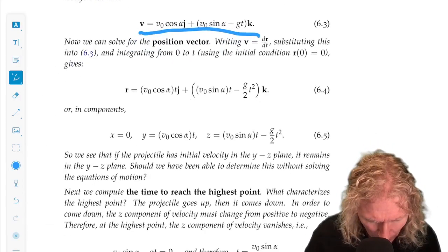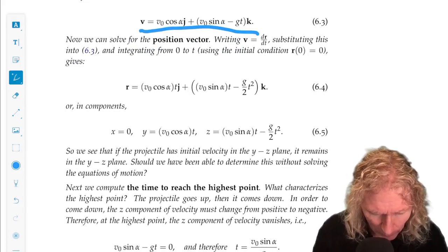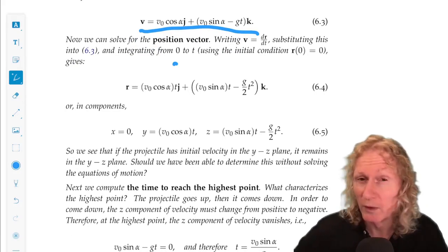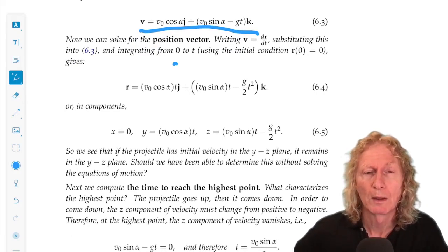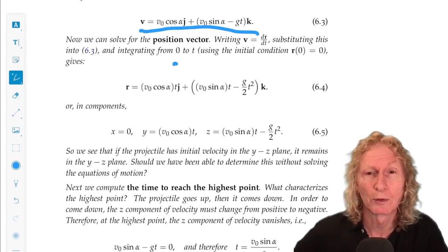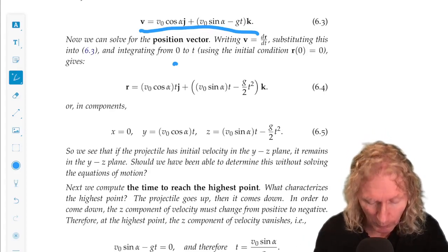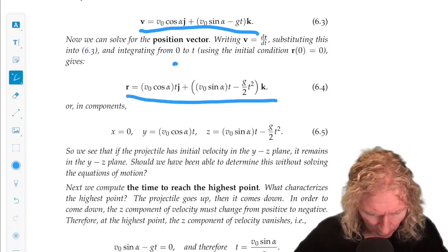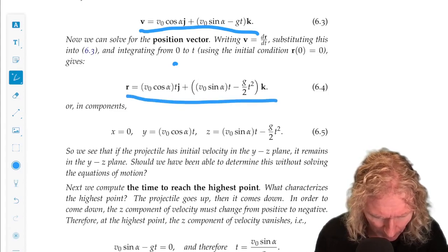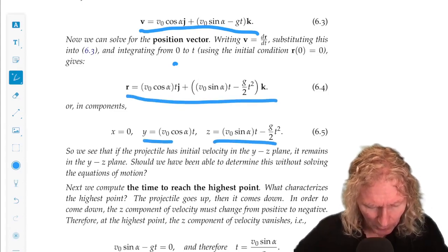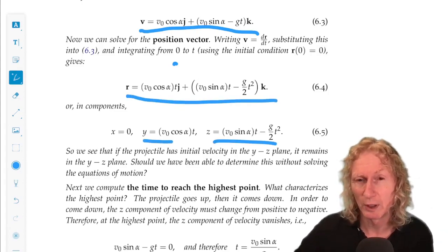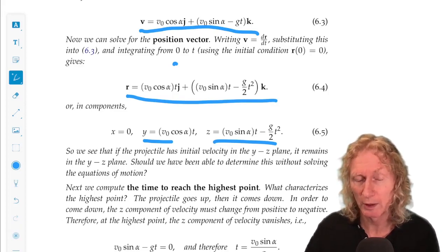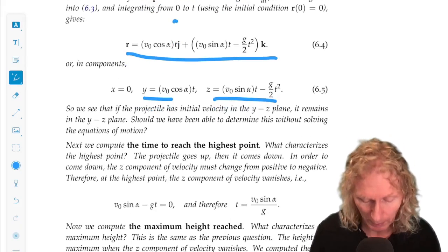Okay, we integrate that one more time from zero to t, because at time zero, the particle is launched from the origin. So it's zero. And we want to know its location at any t. And we get this expression. And we can also write it in components. So x equals zero. No component force in the x direction. It remains zero forever. We always stay in that plane.